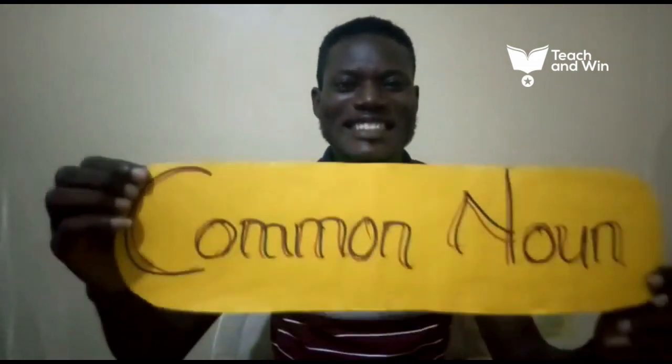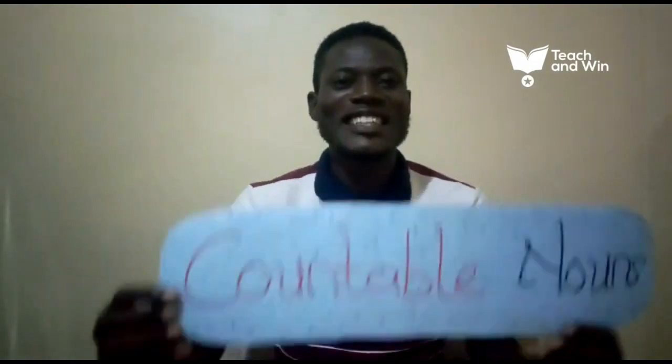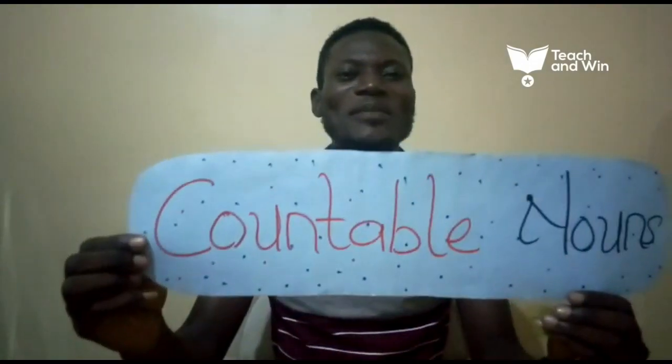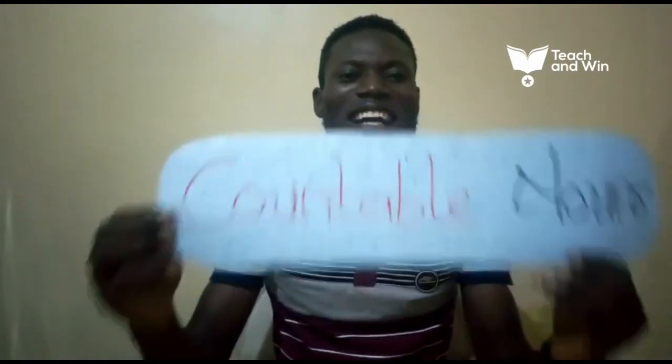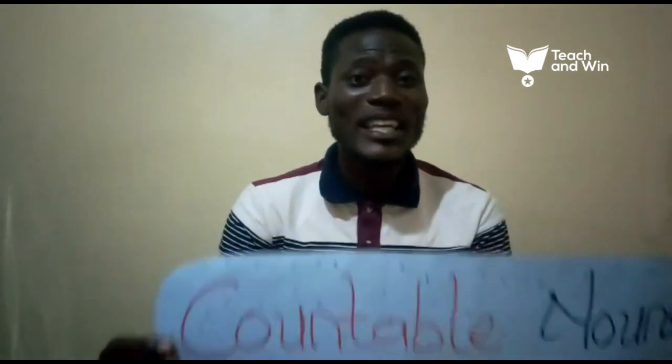The second type of noun is the common noun. Common noun is divided into two. The first one, we have the countable nouns. Countable nouns are those nouns that we can count. They have specific numbers.